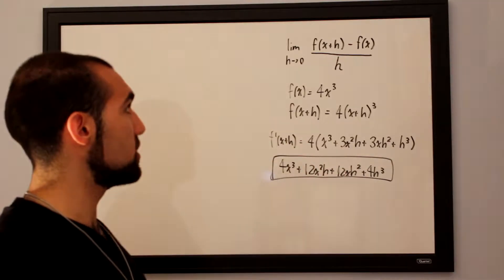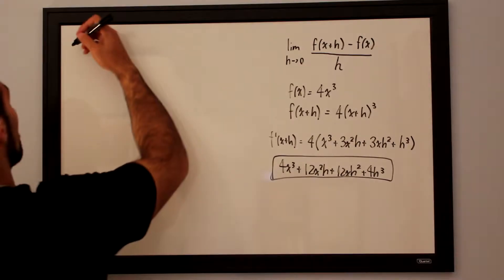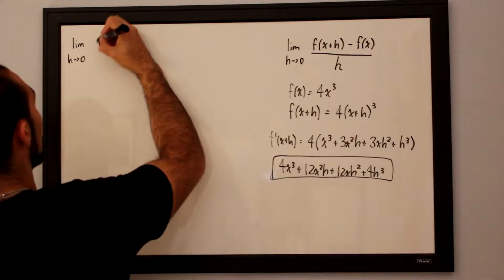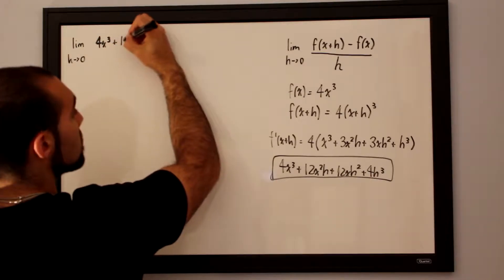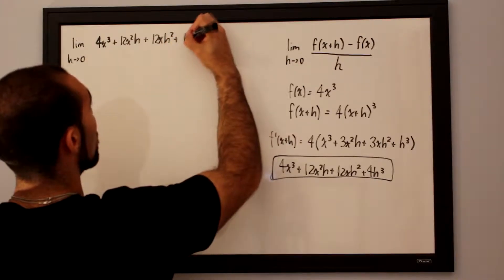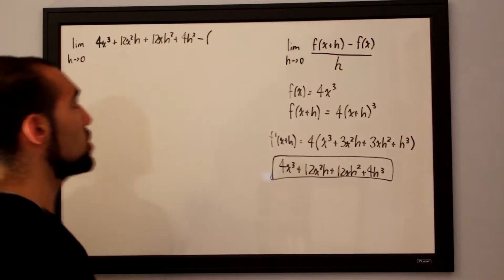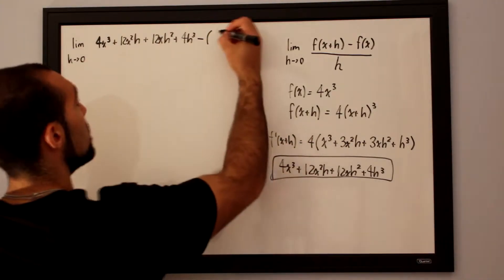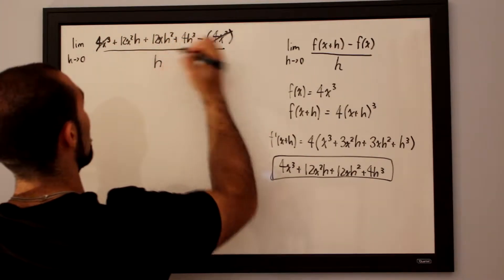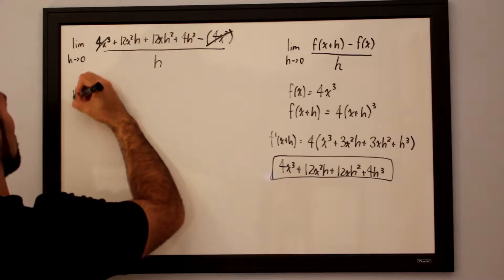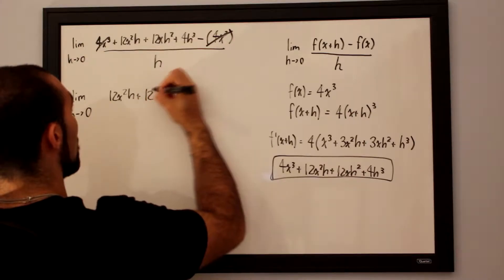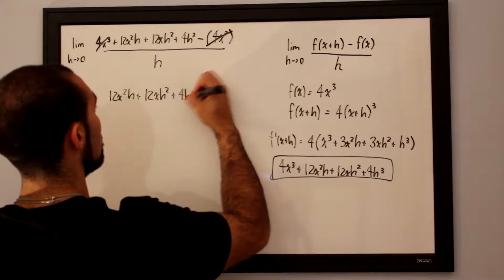Now we have our f of x plus h. We subtract off our initial function and divide everything by h. Taking the limit as h approaches 0 for 4x cubed plus 12x squared h plus 12x h squared plus 4h cubed, minus the initial function 4x cubed, all over h. Crossing out the common 4x cubed terms, we're left with the limit as h approaches 0 for 12x squared h plus 12x h squared plus 4h cubed over h.